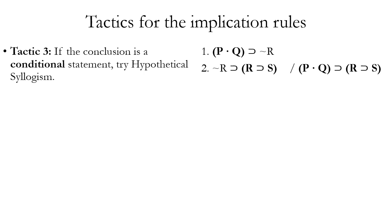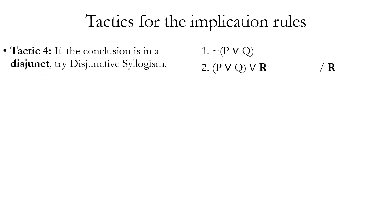Tactic three: if your conclusion is a conditional statement itself, try hypothetical syllogism. This won't always apply, but often will. Here we have two premises that are both conditionals, and one has a consequent tilde R that matches the antecedent of the other — so we use hypothetical syllogism to derive our conclusion. Even if the conclusion has other operators, as long as the main operator is the horseshoe, it fits the general pattern.